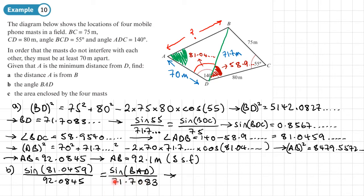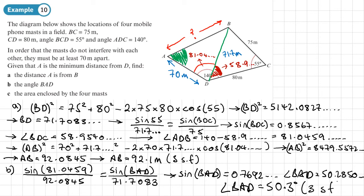So if we times both sides by 71.7083, that will give us the sine of angle BAD as 0.7692. So we then do the sine inverse and we'll get angle BAD as 50.2850. So we'll round that to three significant figures, so we'll have 50.3 degrees. That's three significant figures. So probably now is a good time just to highlight some answers before we move on. So that was side AB, and this is angle BAD.